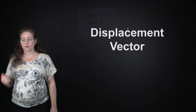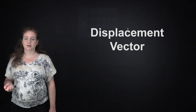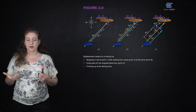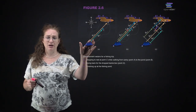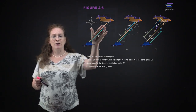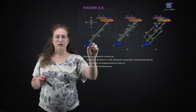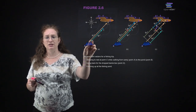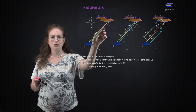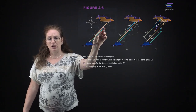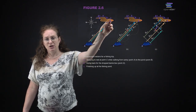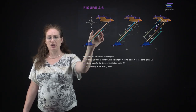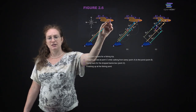The first vector we're going to define in this chapter is the displacement vector. That's the distance from where you started to where you are. In the first case, you go from the tent to a resting point in between, C, and then you go to the pond. When you stop at point C, your displacement vector is the green arrow shown, and when you go all the way to the pond, it's the yellow arrow.